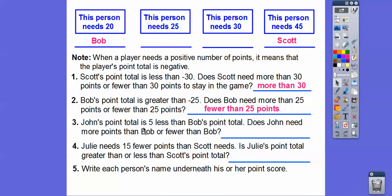John's point total is five less than Bob's point total. If Bob needs 20 points, then John needs 25 points — so this must be John. Does John need more points than Bob or fewer? He needs more points. And since Julie needs 15 fewer points than Scott needs, Julie's point total is going to be greater than Scott's. So this one is Julie.